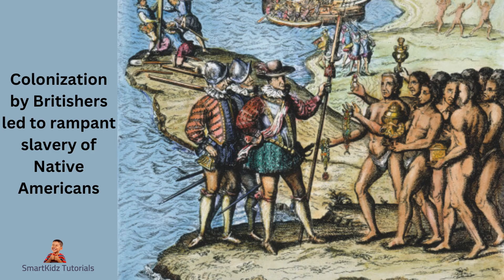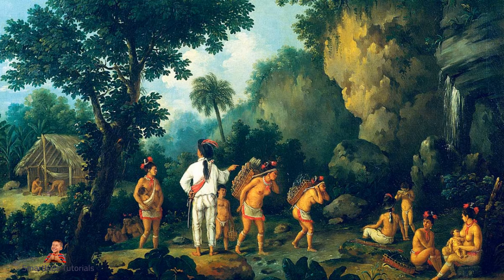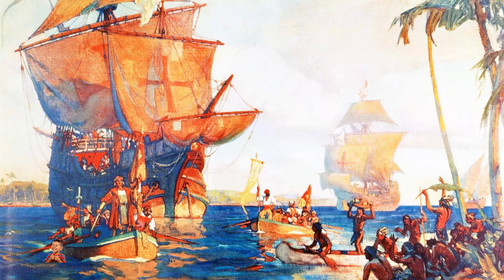Colonization led to slavery. With the colonization of the Americas came the introduction of African slavery. European colonizers forcibly brought millions of African men, women, and children to the Americas to work as enslaved laborers on plantations, mines, and in households. Slavery was an incredibly harsh and dehumanizing institution. Enslaved Africans were treated as property, bought and sold, and subjected to brutal working conditions, physical punishment, and separation from their families.